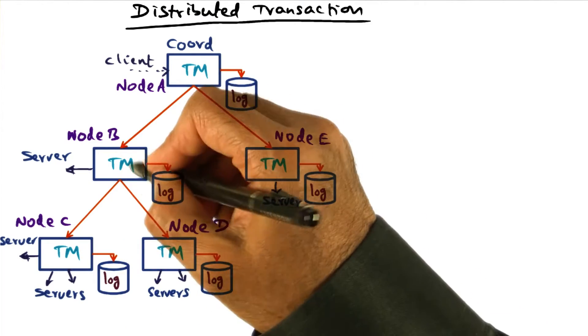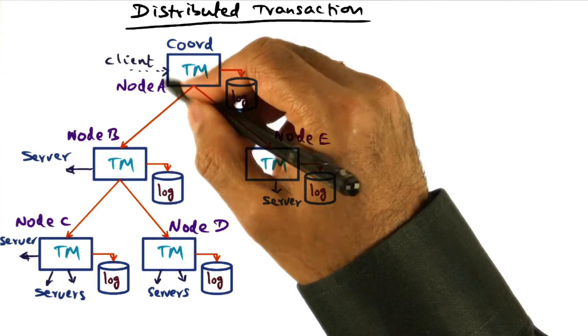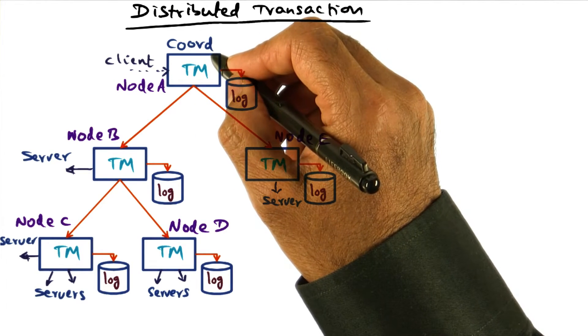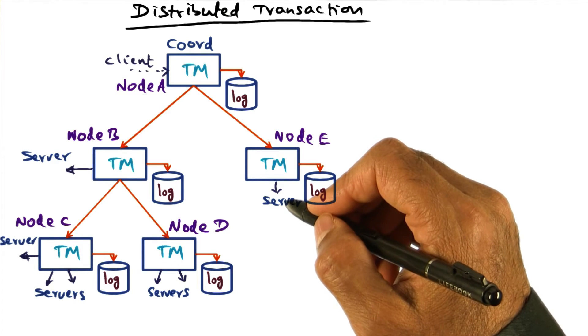In that case, they only have to report to node B and they don't have to necessarily report to coordinator of the whole transaction tree. So this is helpful in reducing the amount of network communication.